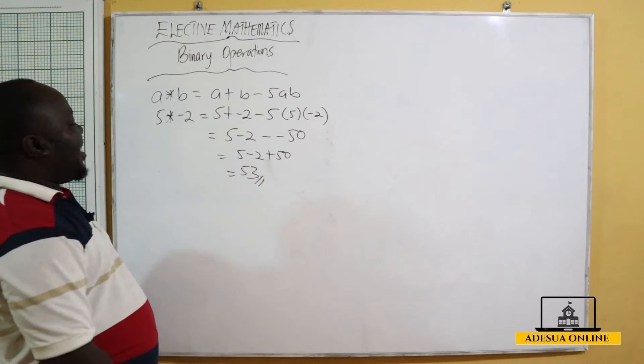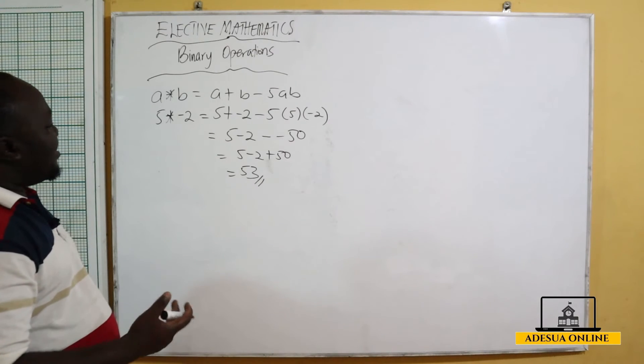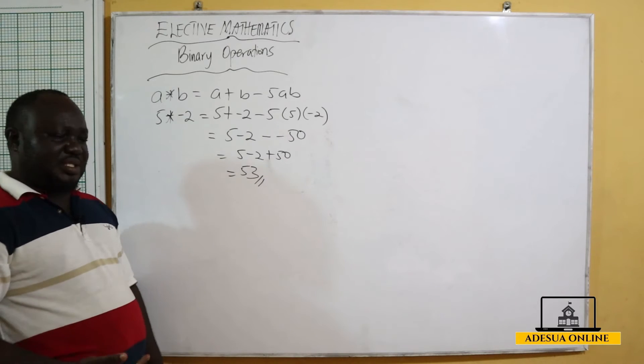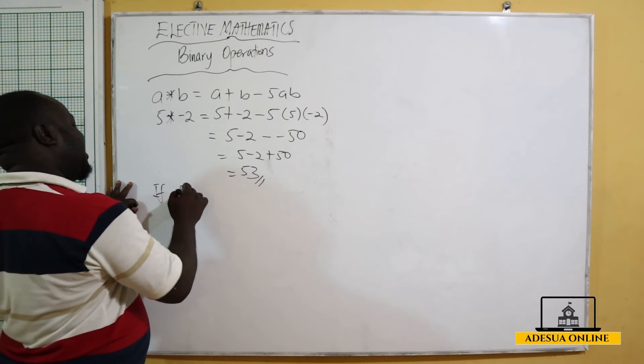So 5 operation negative 2 will give us 53. Now sometimes you can mix up the operations. We can have, let's say, if p operation q...